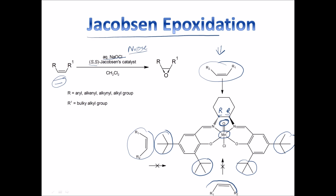Both chiral centers in Jacobsen's catalyst are R-configured. If the stereochemistry is SS, it is the SS Jacobsen's catalyst; if RR, it is the RR Jacobsen's catalyst. For the SS Jacobsen's catalyst, the epoxide is formed above the plane. The mechanism involves a concerted transition state between the alkene and the Mn=O species. For the RR catalyst, the epoxide stereochemistry is opposite to that of the SS catalyst.